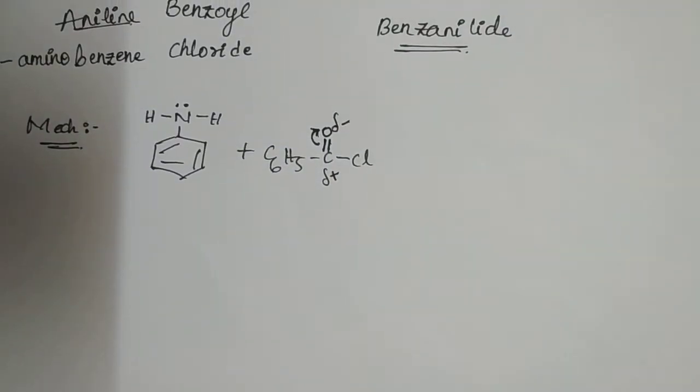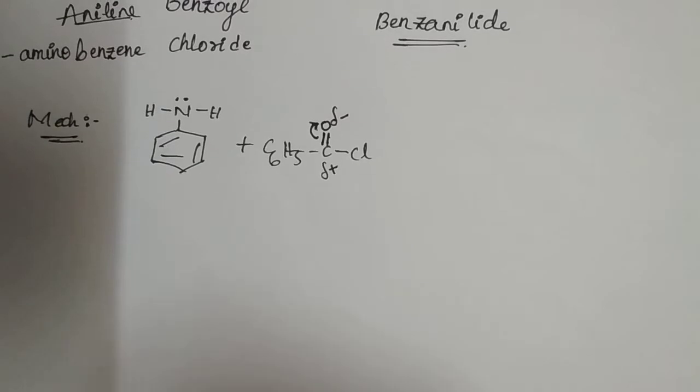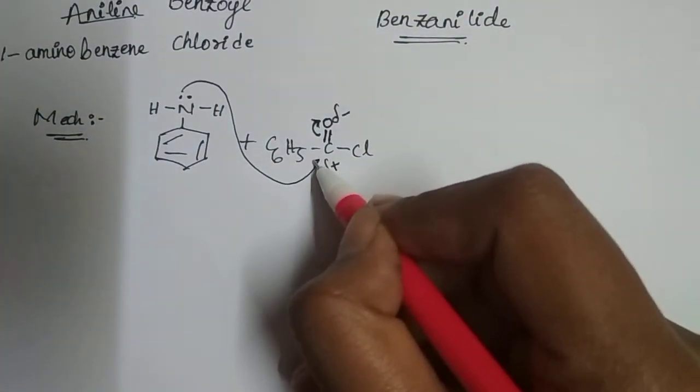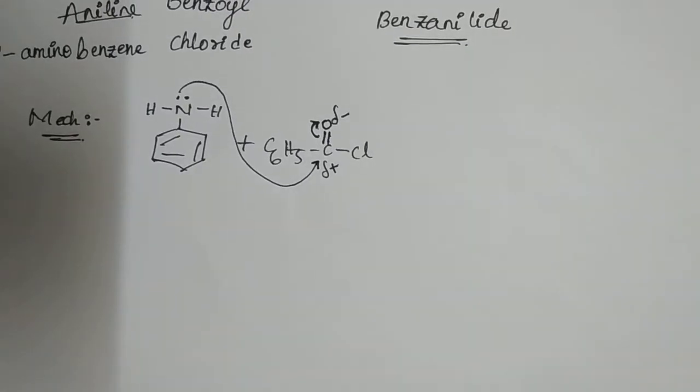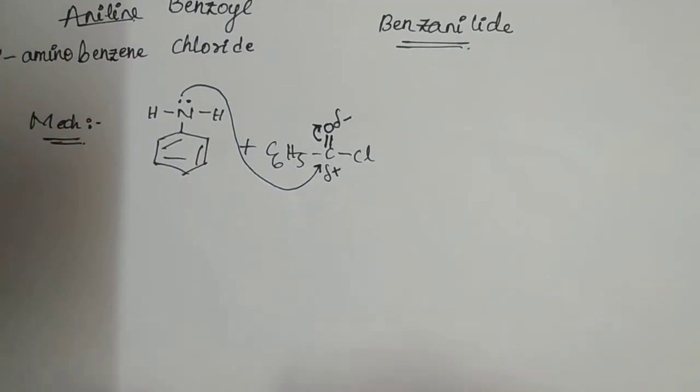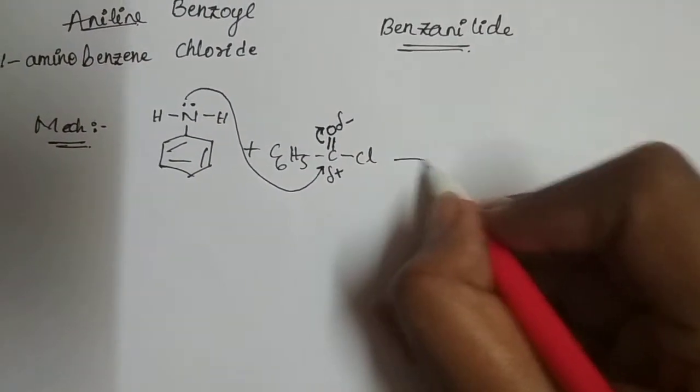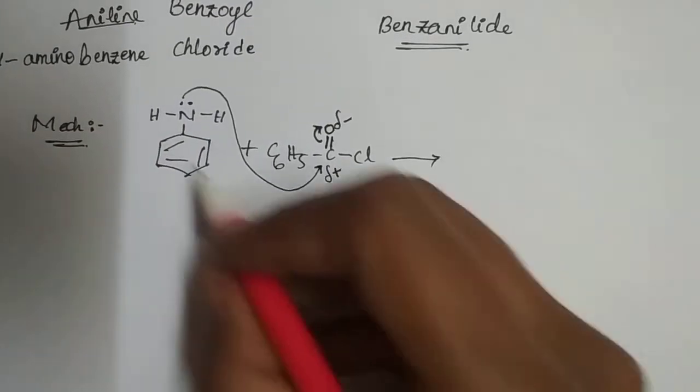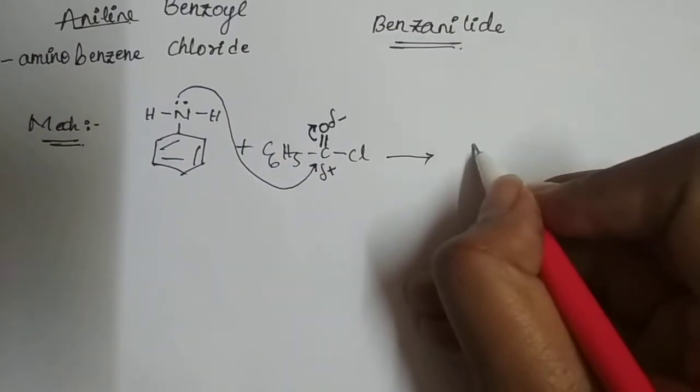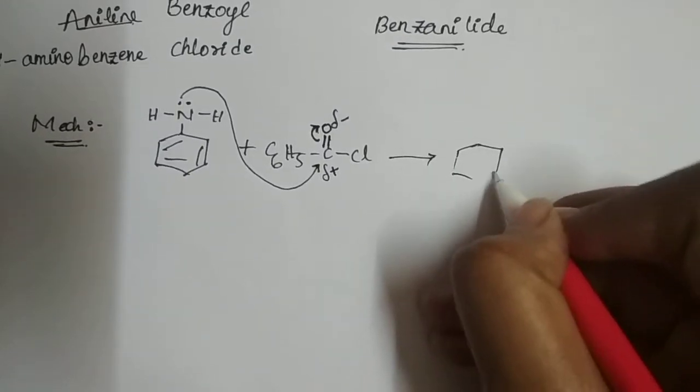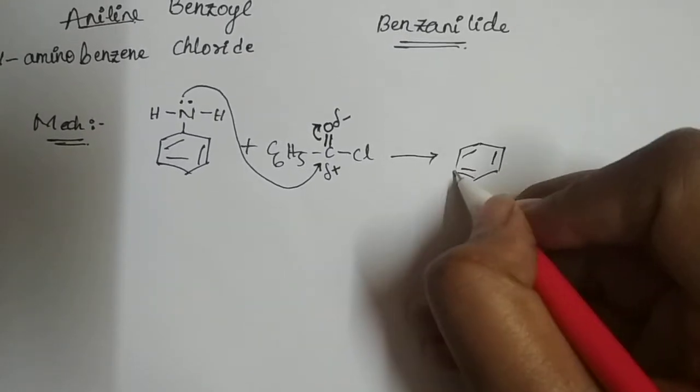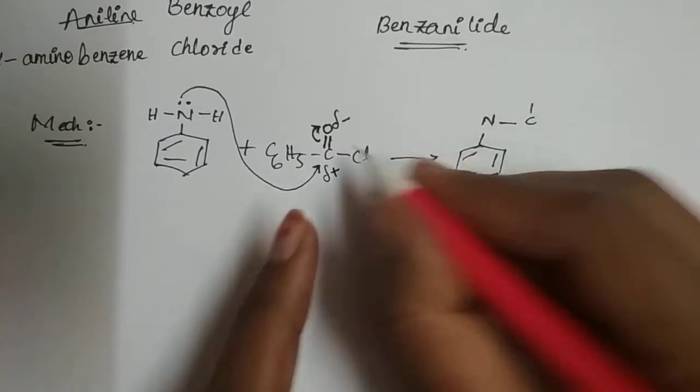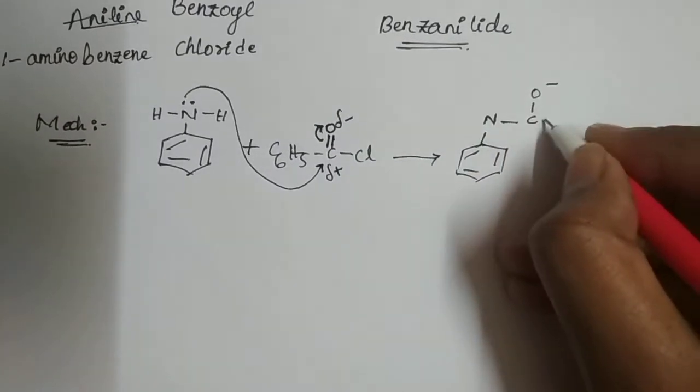Then the nitrogen having lone pair of electrons donates to the electron deficient carbon atom here. Now there is a bond between nitrogen and carbon due to the donation of lone pair of electrons. Benzoyl chloride.